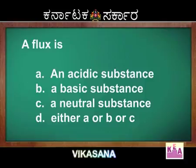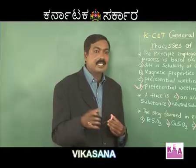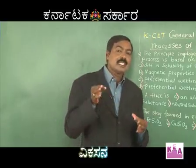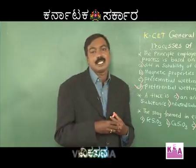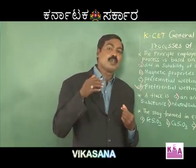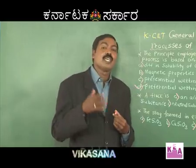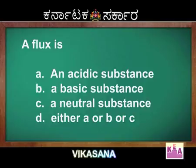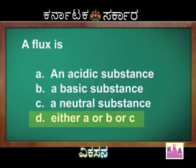To give you a classical example: an example of an acidic flux is SiO₂; an example of a basic flux is calcium oxide (CaO); an example of a neutral flux is sodium sulfate. Therefore, a flux can be an acidic, basic, or neutral substance — option D is the right answer.